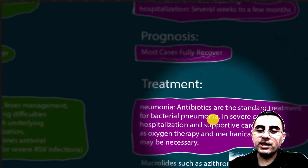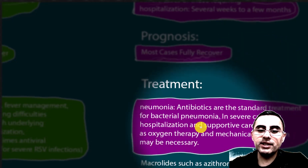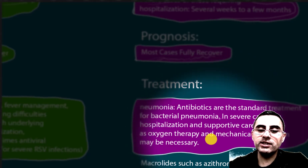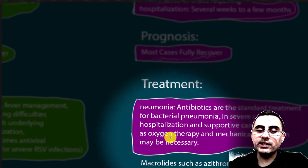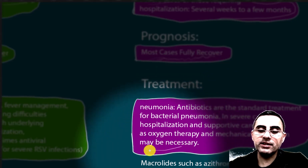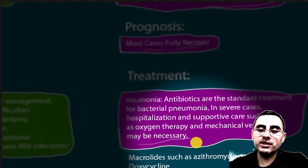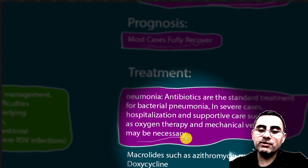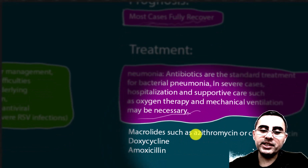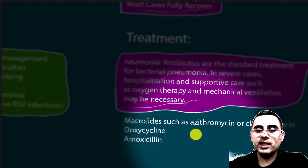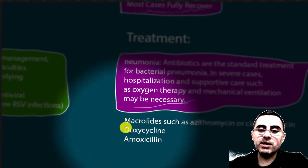Treatment of pneumonia typically involves antibiotics — the standard treatment for bacterial pneumonia. In severe cases, hospitalization and supportive care are important, including oxygen therapy and mechanical ventilation if necessary. There is usually no specific treatment for viral pneumonia, but antiviral medications exist. First-line treatments for bacterial pneumonia include macrolides such as azithromycin and clarithromycin, and doxycycline.